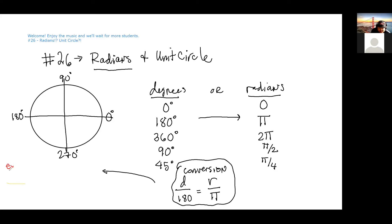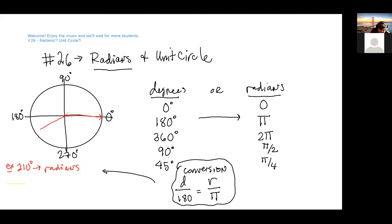Let's say I wanted to convert 210 degrees into radians. How many radians is that? Well, let's first think about where 210 degrees is. The angle starts here and we're rotating counterclockwise. You tell me when to stop when you think I've rotated 210 degrees. That's about 210 degrees right there.